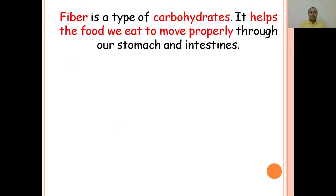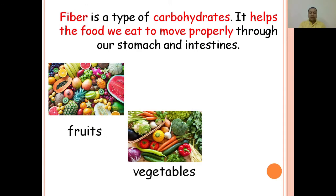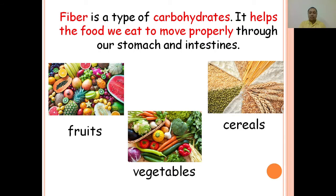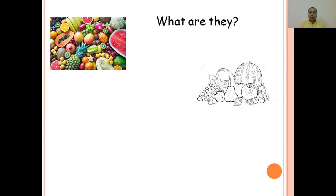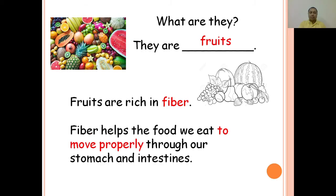Fiber is a type of carbohydrates. It helps the food we eat to move properly through our stomach and intestines. Examples: fruits, vegetables, cereals. What are they? They are fruits. Fruits are rich in fiber. Fiber helps the food we eat to move properly through our stomach and intestines.